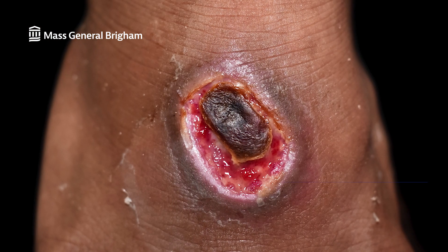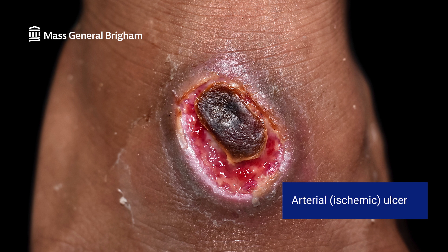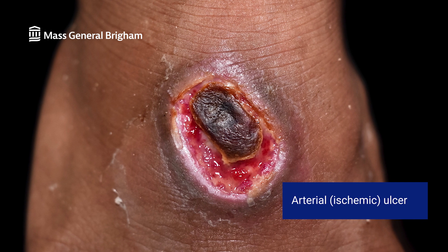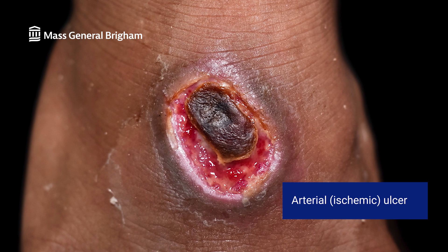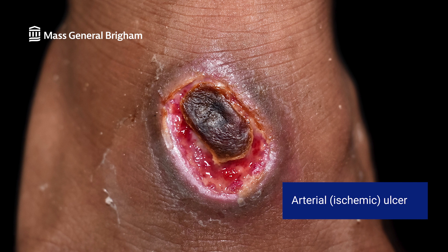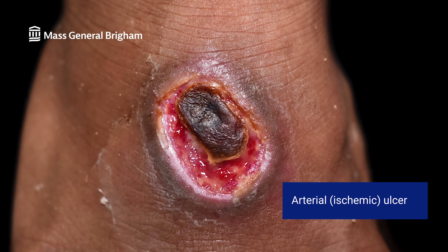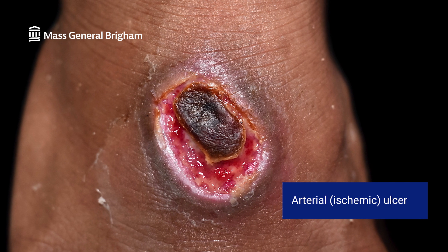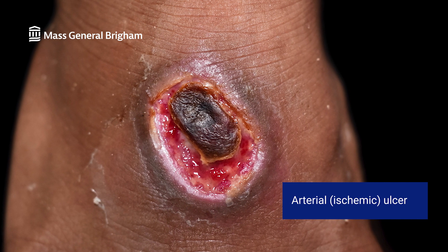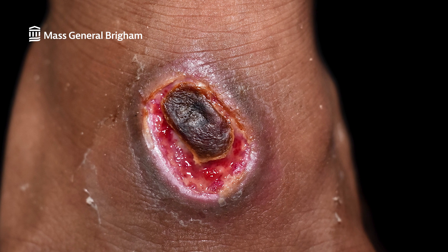Arterial, or ischemic skin ulcers. Blocked arteries can lead to poor circulation, causing these dry, often black-appearing ulcers. They most commonly appear on the feet and legs and can be associated with shiny skin and loss of hair in that area.